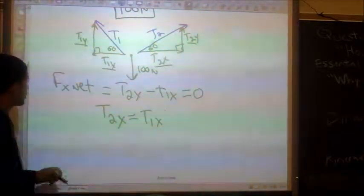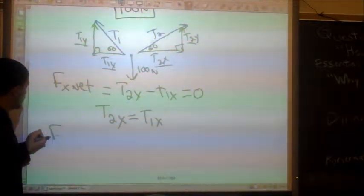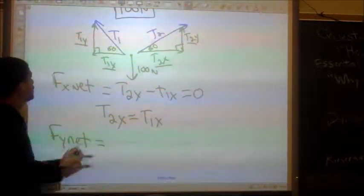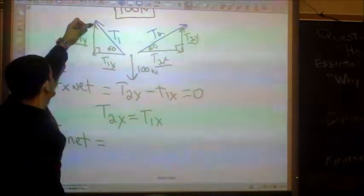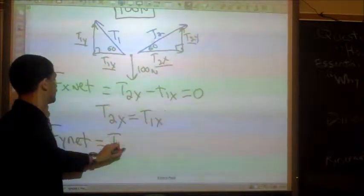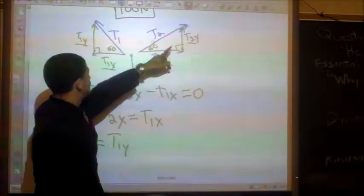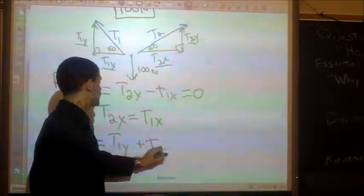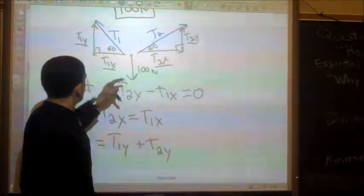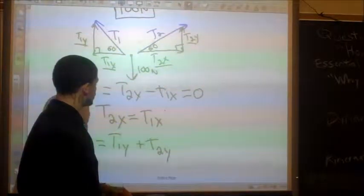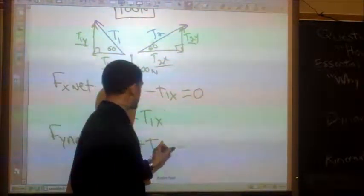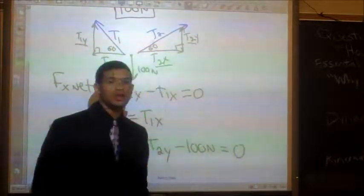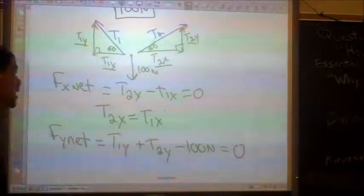So now let's do the sum of the forces in the y direction. We're going to add up all the forces in the y direction. So let's see, we have ty1, and that's heading up, so that's positive. And then we have t2y, and that's heading up, so we know that's positive. And we have 100 newtons force going down, so that has to be negative. So that's all of the sum of our forces in the y direction.